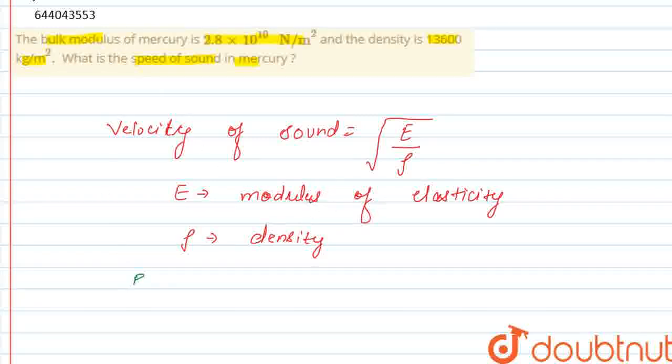So here the modulus of elasticity is given. That is bulk modulus, which is represented by B: 2.8 into 10 to power 10 Newton per meter square. And the density is also given, which is 13600.